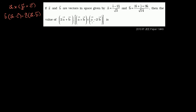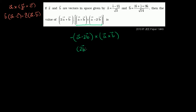We have a triple-product-looking thing here: the cross product of two vectors crossed with a third. We can swap it around to match the formula. So the green part — a × b × (a − 2b) — is the same as negative ((a − 2b) × (a × b)), which distributes to (2b − a) × (a × b). This form is exactly the form of the triple product expansion.